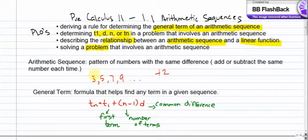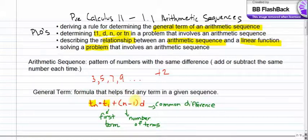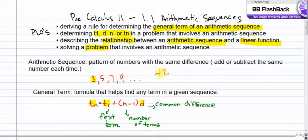You need to know what the general term is — basically a formula that helps find any term of the sequence. T of N is the term you're looking for. T1 is the first term of the sequence, so using our example, that would be 3. N is the number of terms in the sequence, and D is the common difference. In this example, that would be 2 because you add 2 every time.